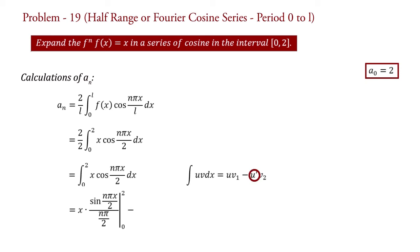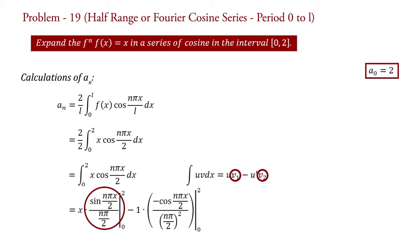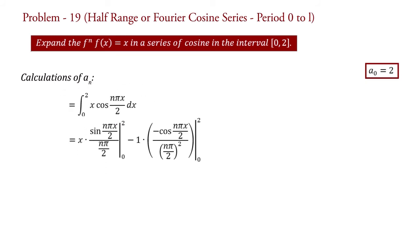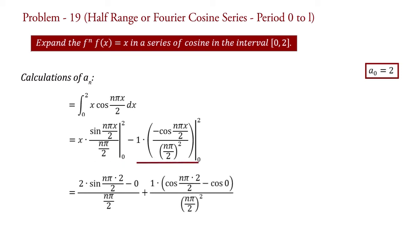Minus u', which is the differentiation of x = 1, multiplied by v2, the integration of v1. That is the integration of sin(nπx/2) divided by (nπ/2), which gives −cos(nπx/2) divided by (nπ/2)², with limit 0 to 2. Putting in the values of limits: an = 2·sin(nπx/2)/(nπ/2) + 1·cos(nπx/2)/(nπ/2)² minus cos(0)/(nπ/2)².